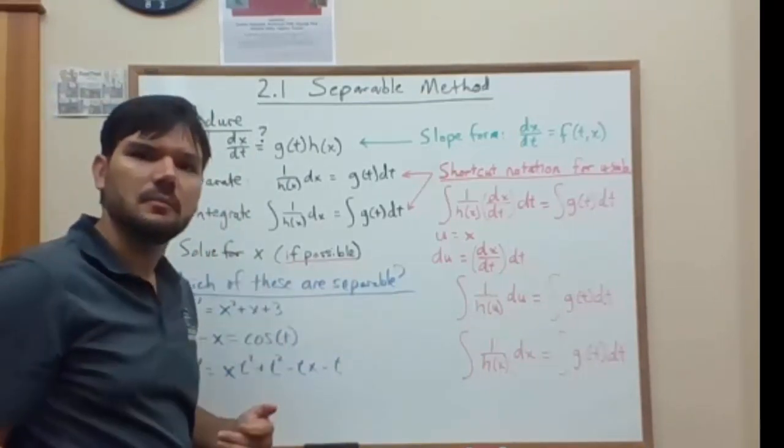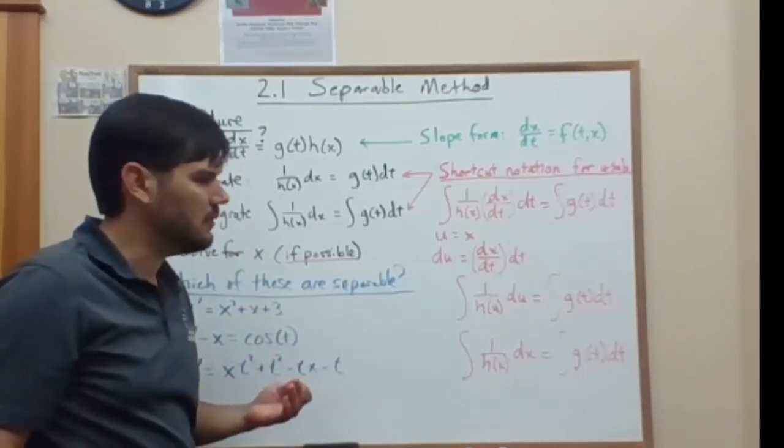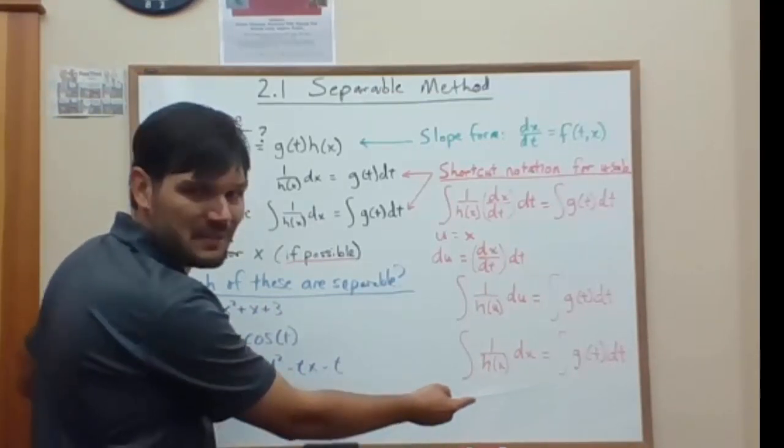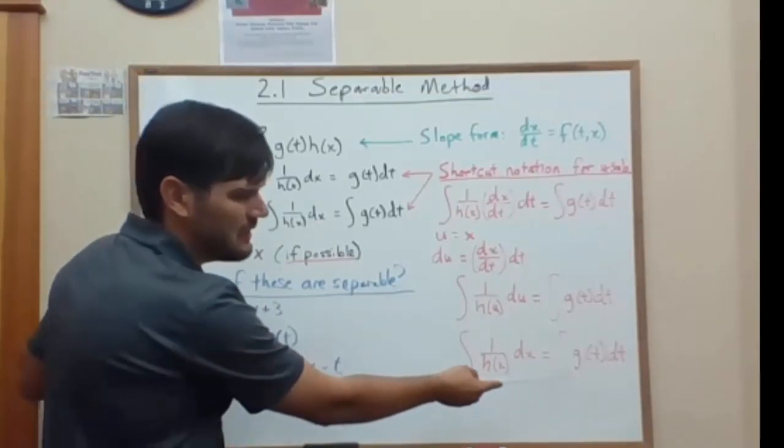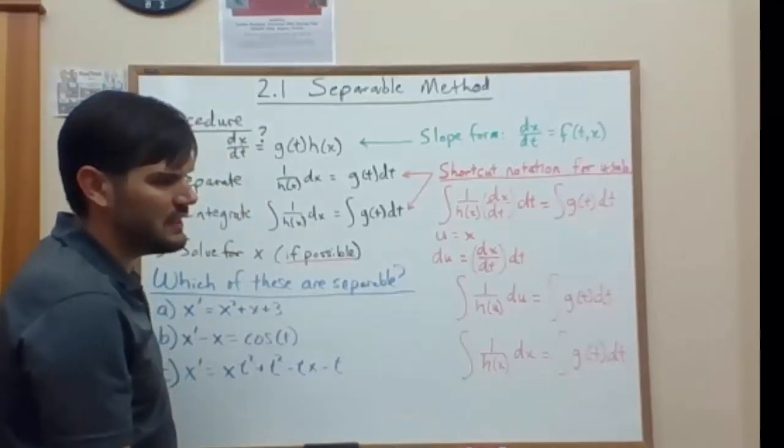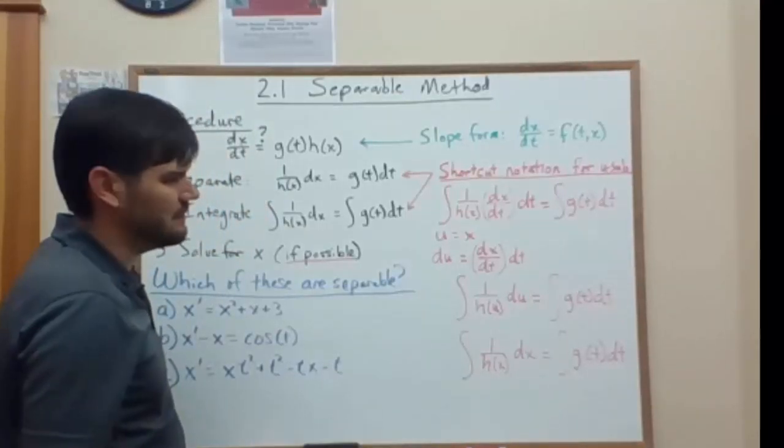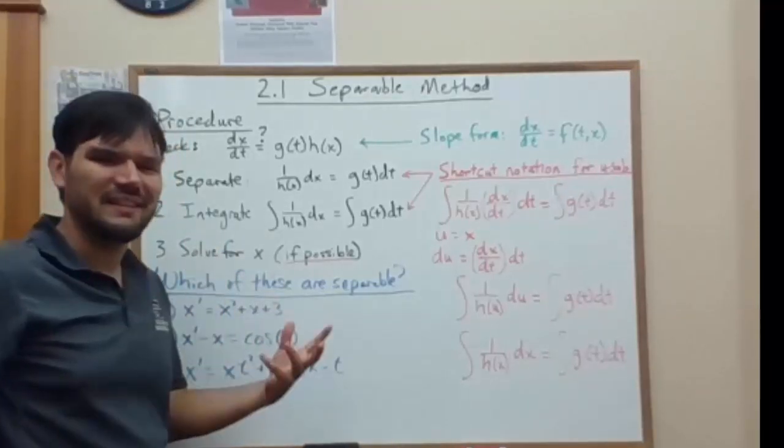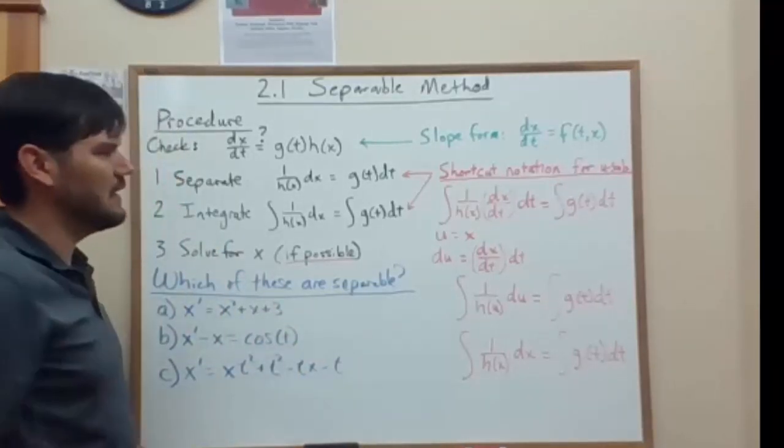we could flip back a little bit and just replace that variable with x, and we have the integral of one over h of x times dx equal to the integral of g(t) times dt. And that's exactly what we do in the method of separating the variables.